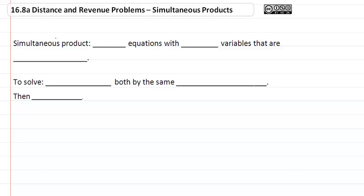16.8a Distance and Revenue Problems, Simultaneous Products. Simultaneous product is basically just two equations with two variables that are multiplied.